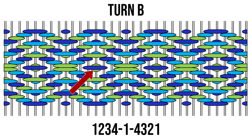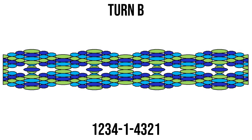In this turn, the extra pick on shed 1 adds in the long floats that are needed to cover up those dots. The effect is like a string of little eyes joined by a single line.